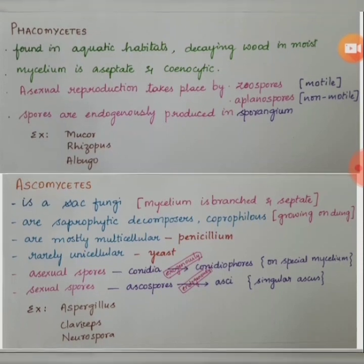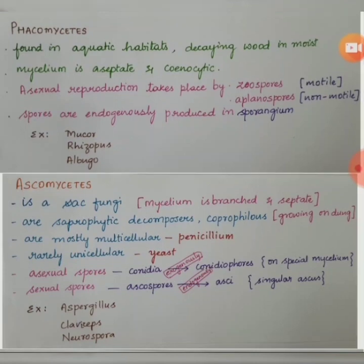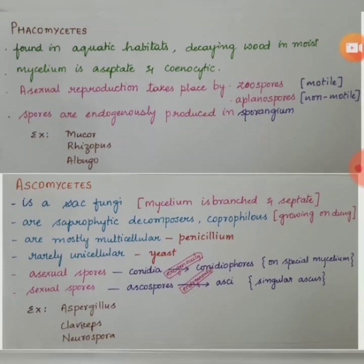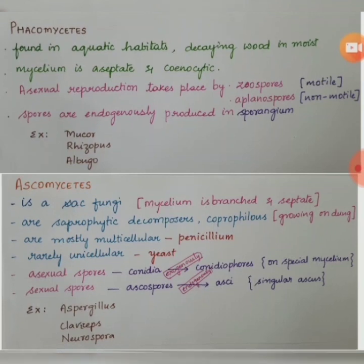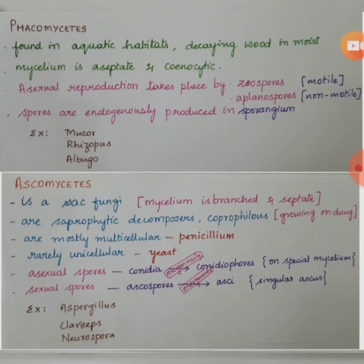The next kind of fungi we are going to study is ascomycetes, which is a sac fungi. 'Asco' here means sac. Their mycelium is branched and septate. Ascomycetes are fungi which are saprophytic decomposers, and they are coprophilous as well.